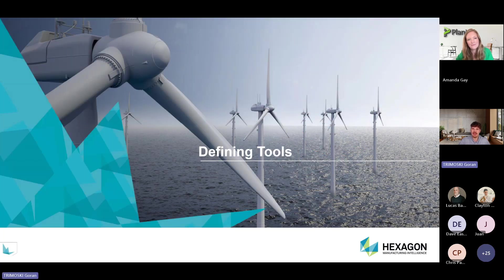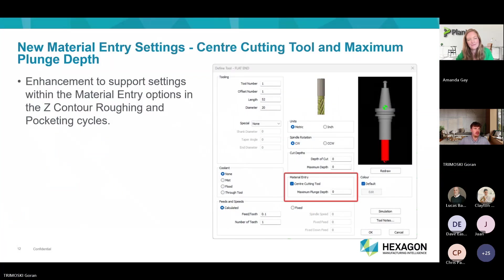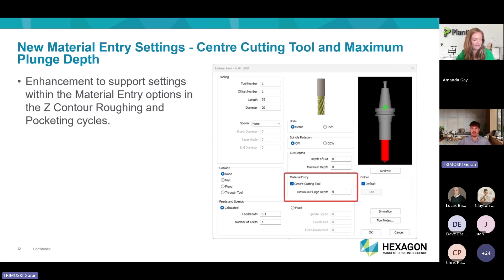In the defining tool section, just like with the lathe where we moved coolant to the tool, we also moved two features — the center cutting tool and the maximum plunge depth — to the tool as well. You'll see in a few slides that these can also be controlled in the machining style in the operation. This will be applied to both pocketing and roughing operations.